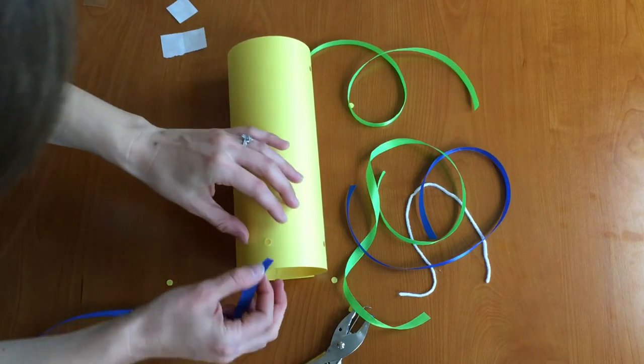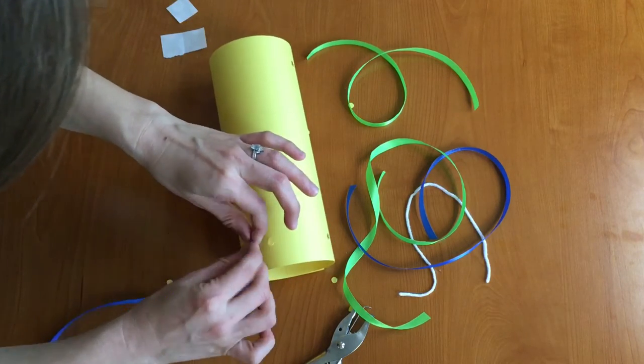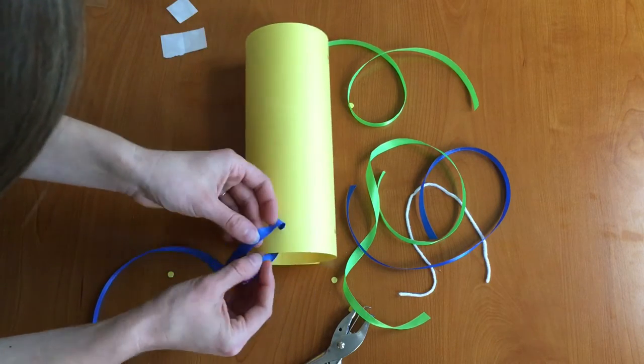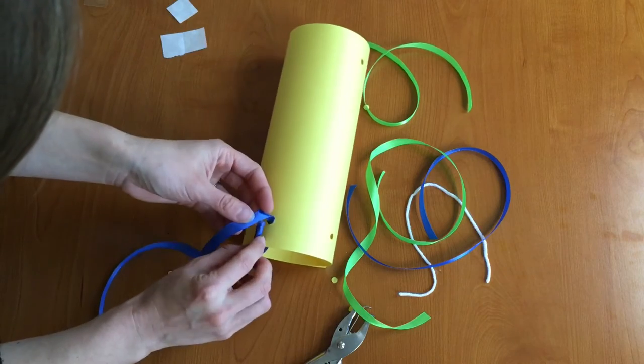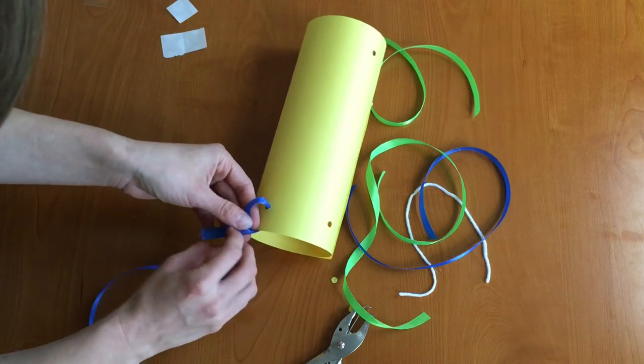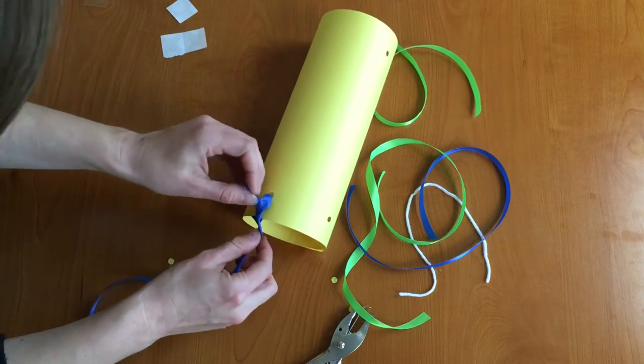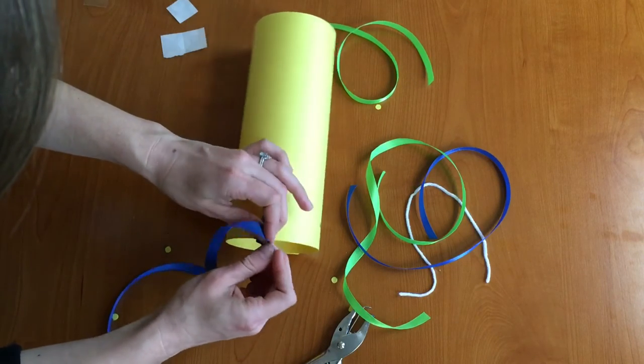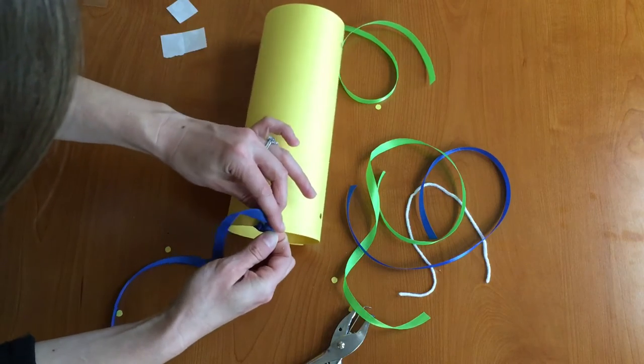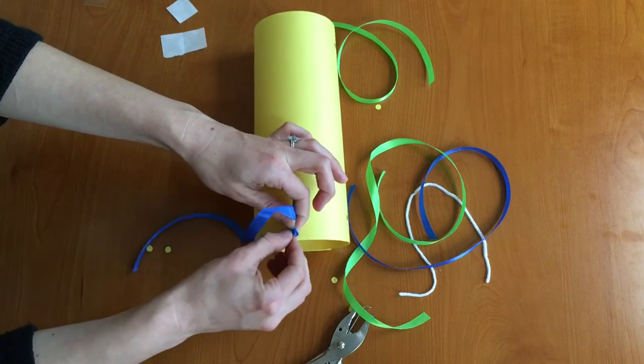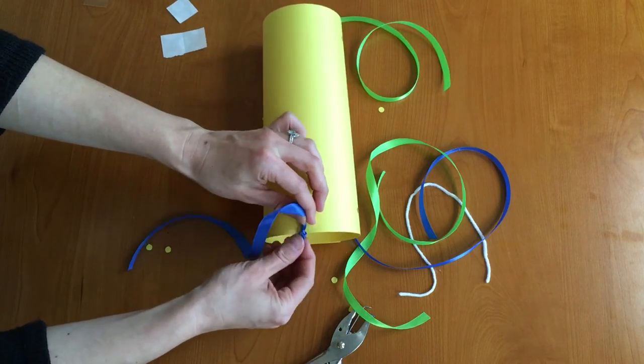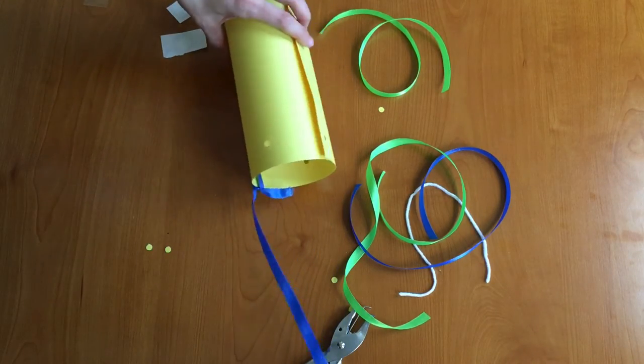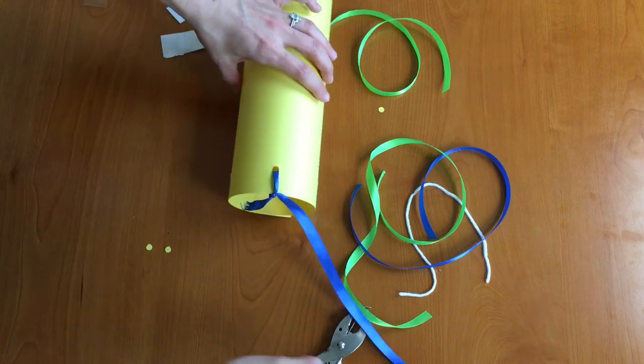Now we want to take the ribbons and tie them onto your wind sock through those holes that we made with the hole punch. So thread them through and tie them. Now don't pull too tightly because you don't want to crinkle your paper, but I'm just using double knots and tying them just like that. I'm going to tie the rest on and I will show you my results in just a second.